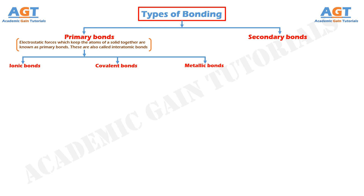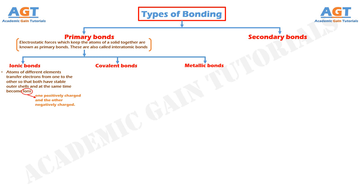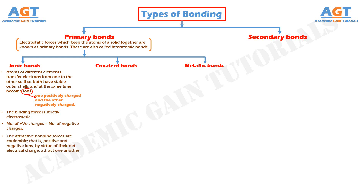Ionic bonds. In ionic bonds, atoms of different elements transfer electrons from one to the other so that both have stable outer shells and at the same time become ions — one positively charged and the other negatively charged. The binding force is strictly electrostatic. The major requirement in an ionic bonded material is that the number of positive charges should be equal to the number of negative charges. Sodium chloride, NaCl, is the classic ionic material.